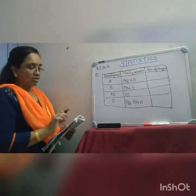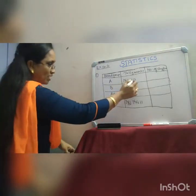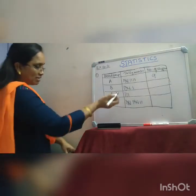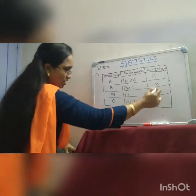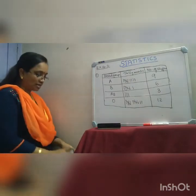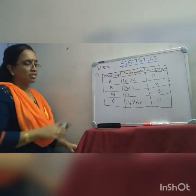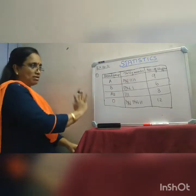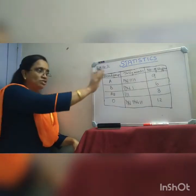After selecting all groups, we count the tally marks in each column. For group A: five plus four equals nine. For group B: five plus one equals six. For group AB: three. For group O: five plus five plus two equals twelve. The total is nine plus six plus three plus twelve equals thirty. Since the data is about 30 students, this confirms the table is correct. This completes the frequency distribution table.